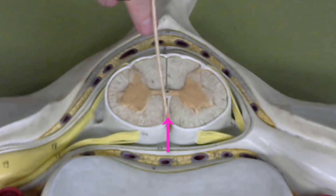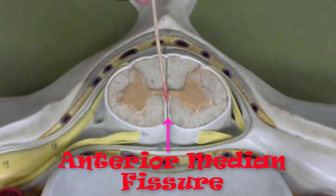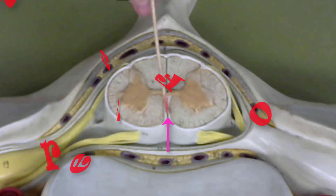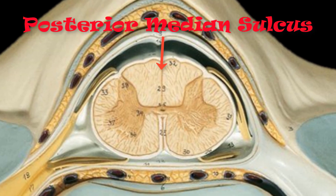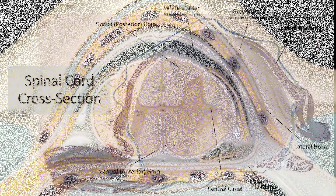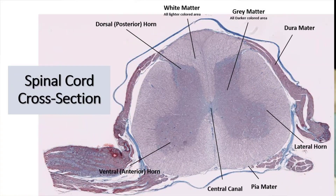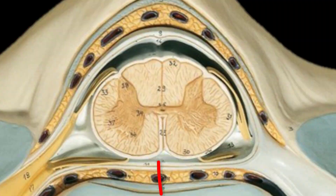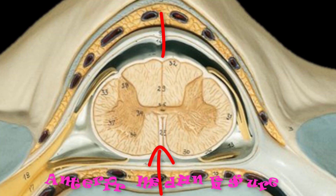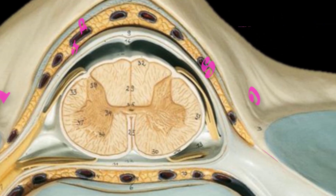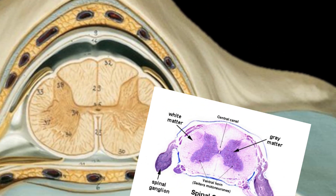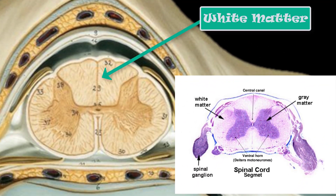Here we have the anterior median fissure of the spinal cord, and this is the posterior median sulcus. So if you're seeing this structure on a slide or on another model, the easiest way to tell anterior from posterior is to look for this anterior median fissure, which is much larger than the posterior median sulcus.